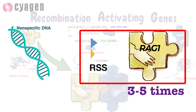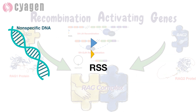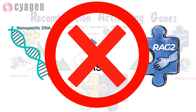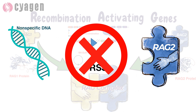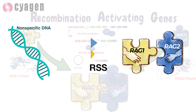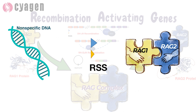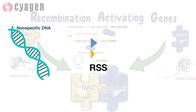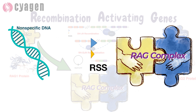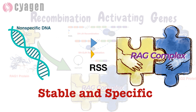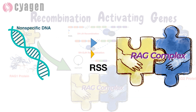Regarding the functional differences between RAG1 and RAG2: in the presence of RSS and non-specific DNA sequences, RAG1 binding to RSS is only three to five times higher than that of non-specific DNA sequences. Alternatively, for RAG2, no binding to DNA was observed experimentally. When RAG1 and RAG2 are present together, they can form a RAG complex with DNA that is more stable and specific than the RAG1-DNA complex alone.